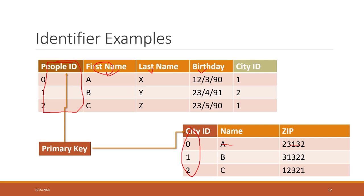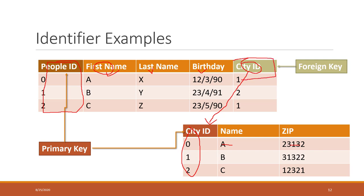Do we have a foreign key? Yes. The city ID will be the foreign key on the people's table, because it refers to the primary key on another table. By linking two tables together, we create a relationship between them. The foreign key on one table refers to the primary key on another table. That is the difference between a foreign key and a primary key.